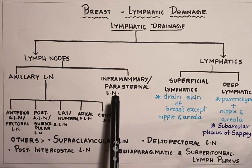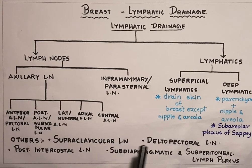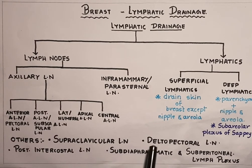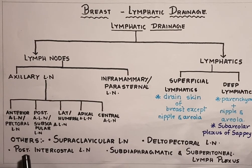The other lymph nodes which drain the mammary region include the supraclavicular lymph nodes, situated above the clavicle; the deltopectoral lymph nodes, situated between the deltoid and pectoral muscles inferior to the clavicle; and the posterior intercostal lymph nodes, situated in the posterior region of the intercostal spaces.